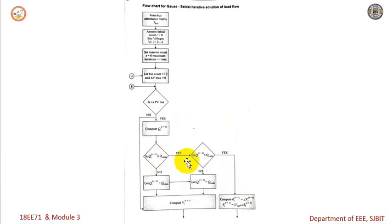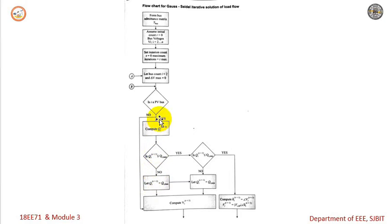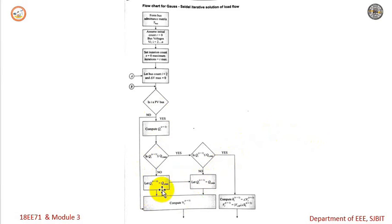If the calculated reactive power goes beyond the minimum or maximum limits, then we treat that particular bus as a PQ bus and compute the voltage V_i. If the calculated Q exceeds the maximum value, set Q equal to Q_i max. If it is less than the minimum value, set Q equal to Q_i min. Under both conditions, treat the bus as a PQ bus and compute V_i.